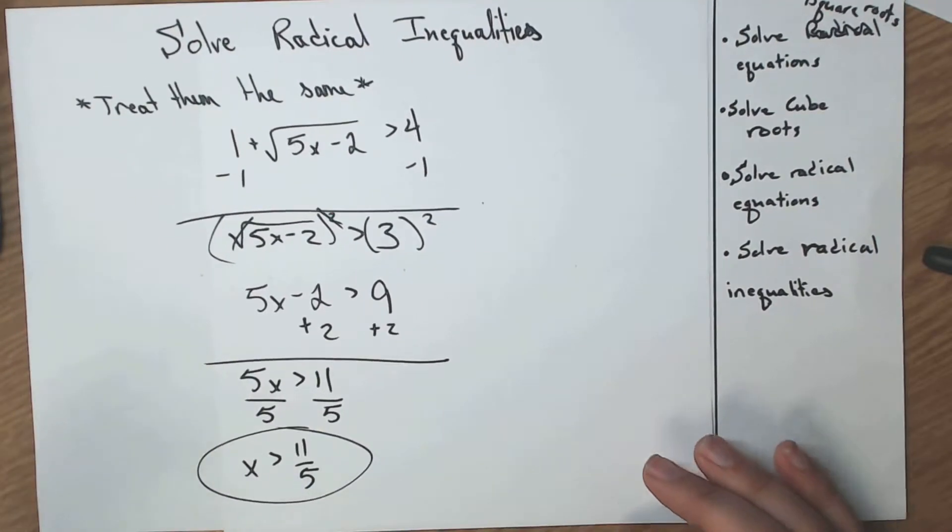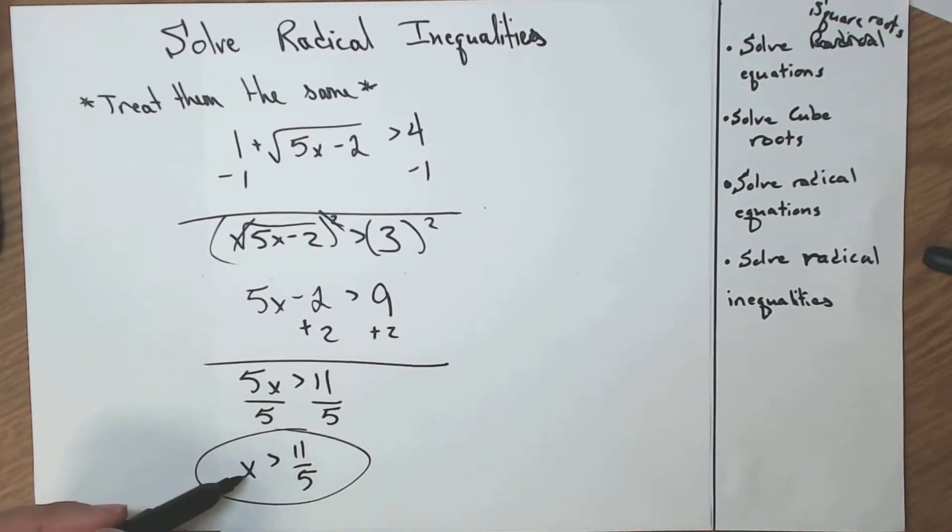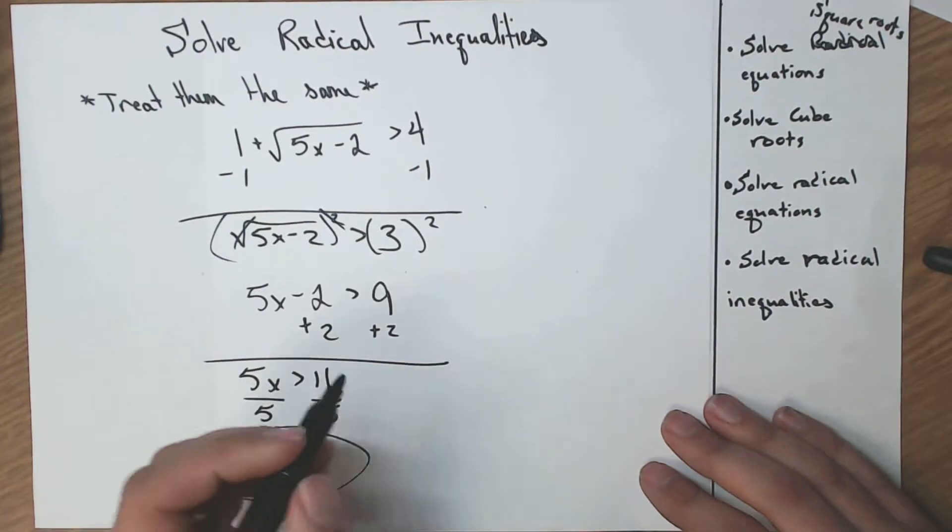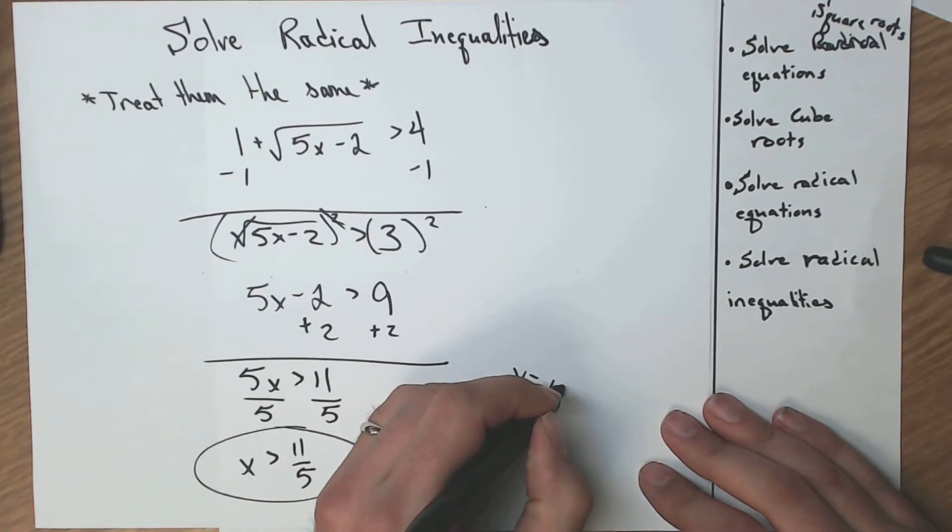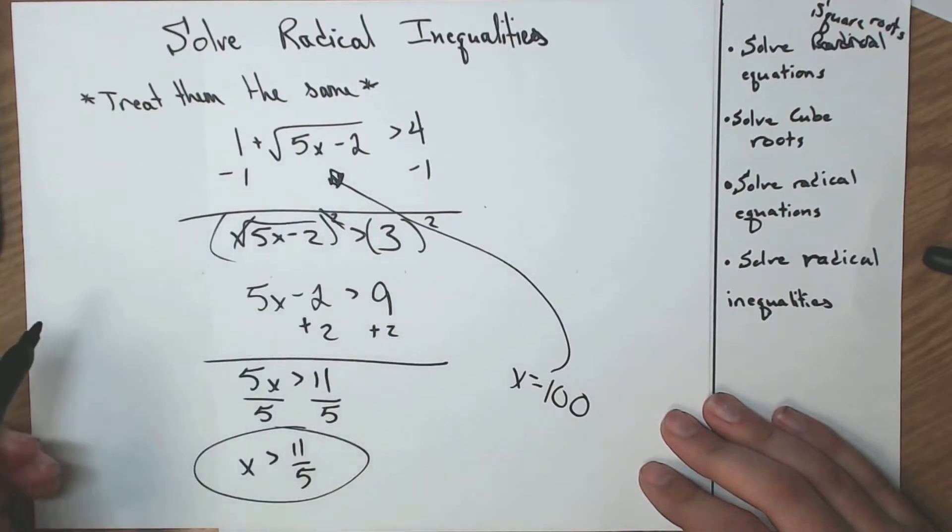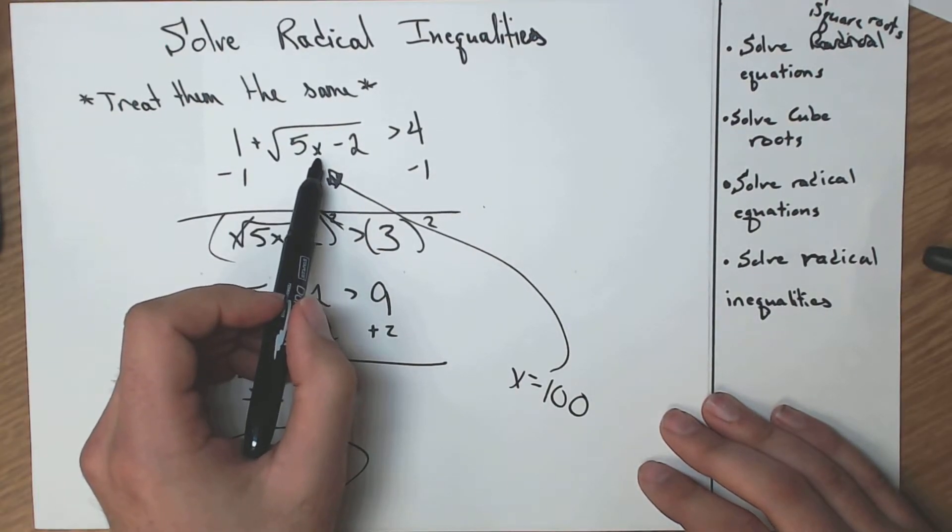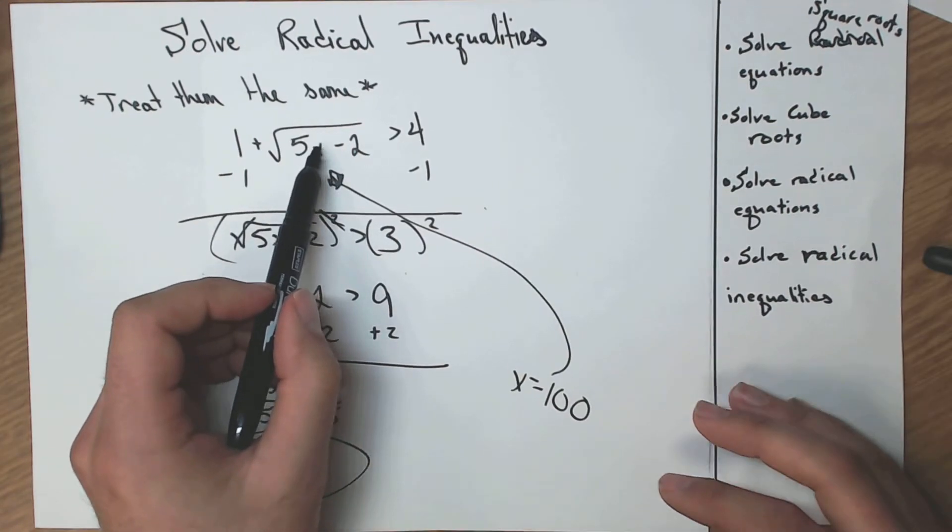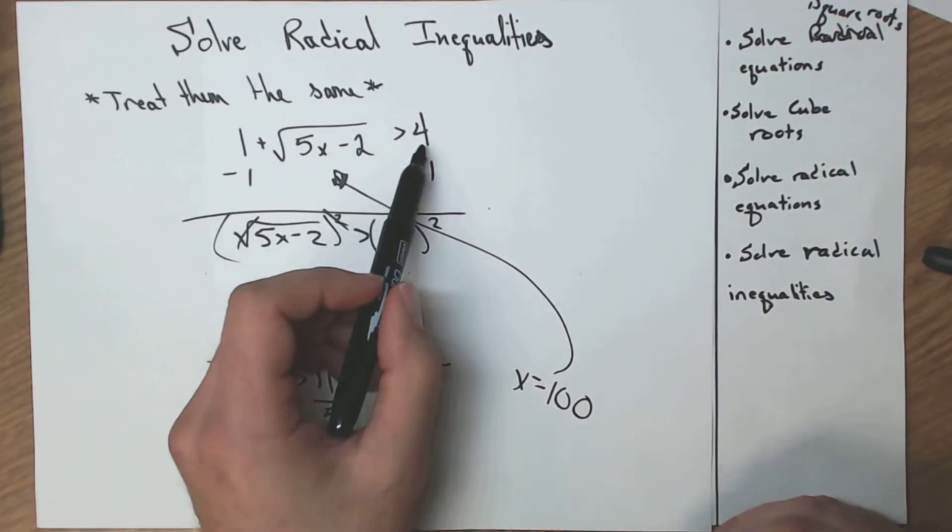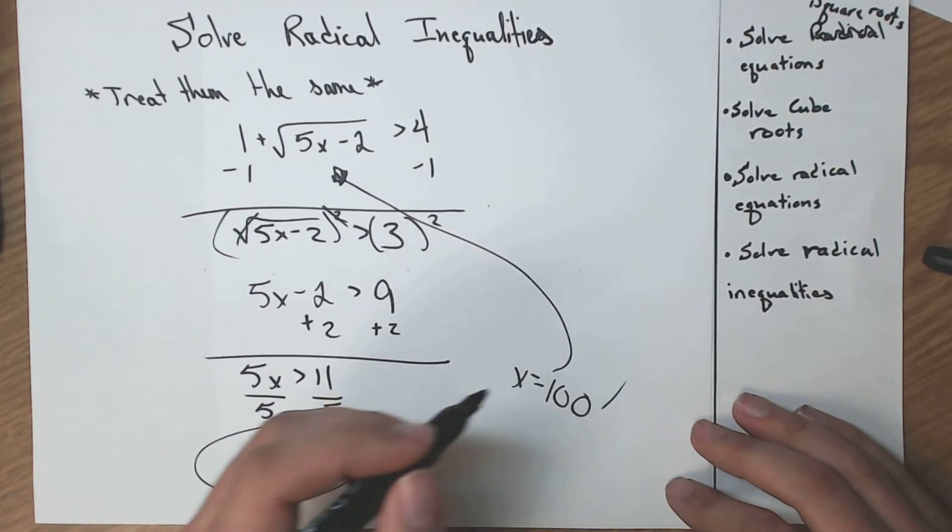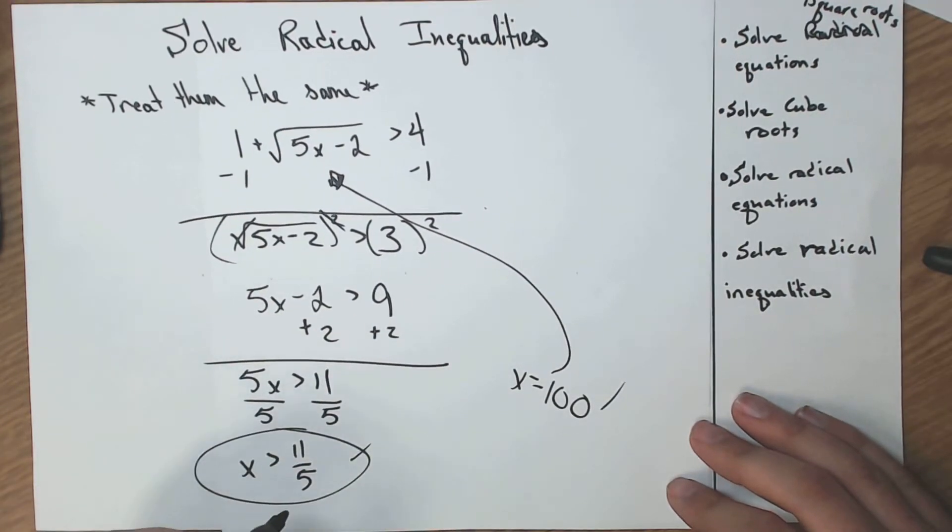Let's just plug in a number just to be safe. Let's check it. What's a number that's greater than 11 fifths? Well, that's 2 and a fifth, or 2.2. Let's do 100. So if x equals 100, and we plug that in up in here, we have 5 times 100. That's rather large. Minus 2 is not going to change much. Square root, I'm still a big number. Plus 1, I'm definitely greater than 4. I'm going to say that that works, and this one is good.